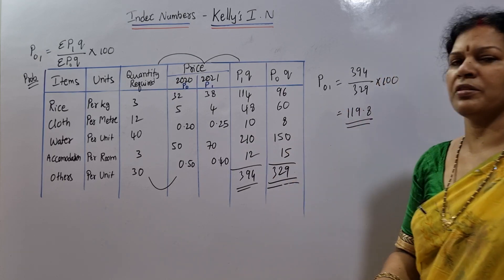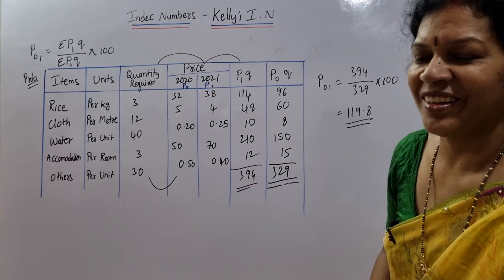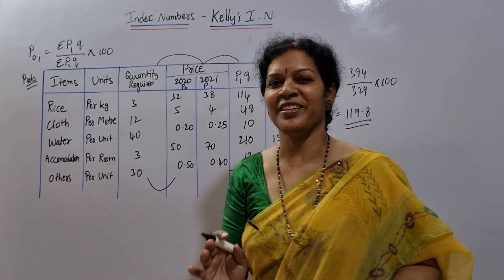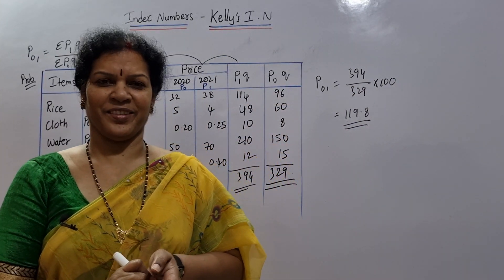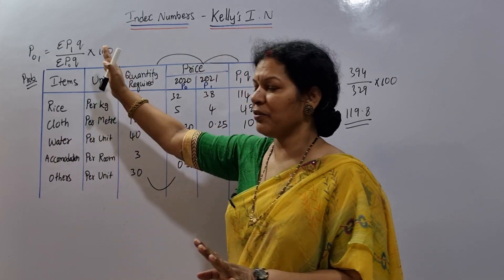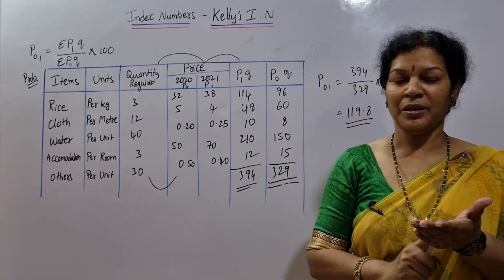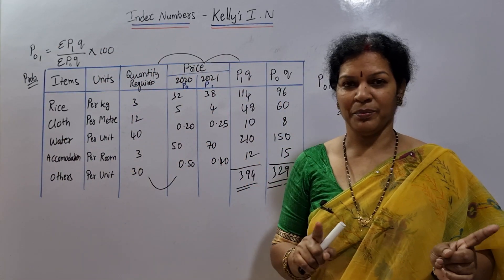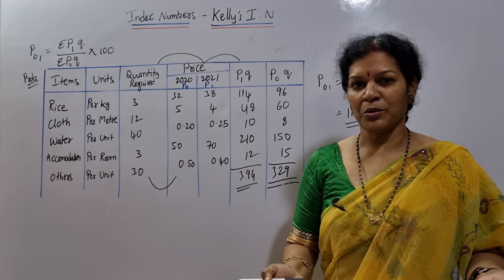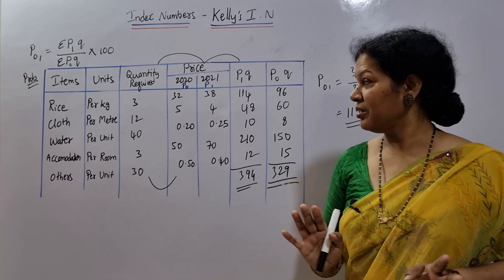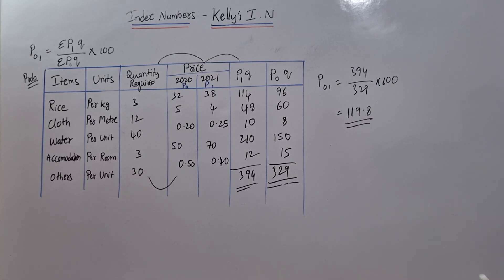Isn't it easy? This is the easiest index number — Kelly's Index Number. Simply remember the formula: sigma P1Q divided by sigma P0Q, into 100. That's all. You can take a screenshot if you want.